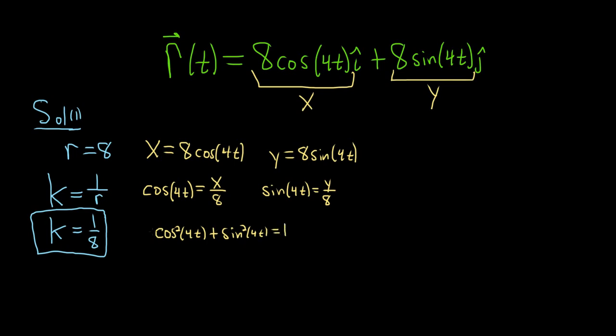Then notice that cosine is x over 8. So when you square it, you simply get x squared over 64. And sine is y over 8. So when you square it, you get y squared over 64. And that's equal to 1. Multiplying by 64, going kind of fast, you would get this.